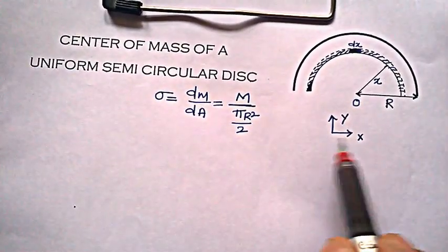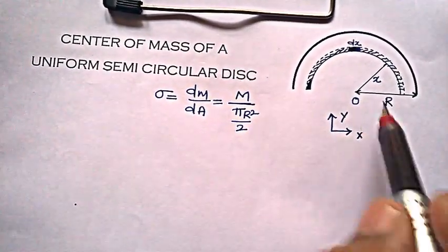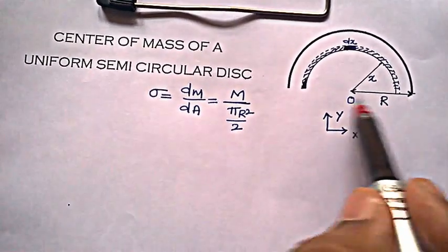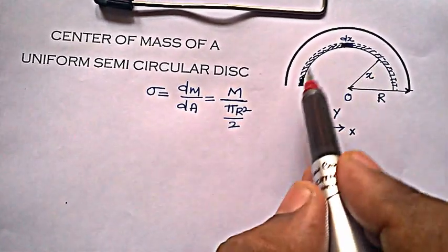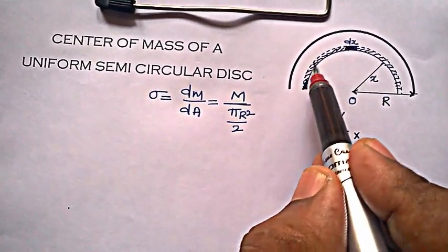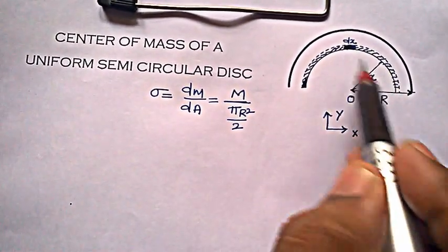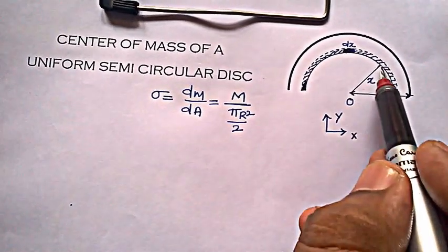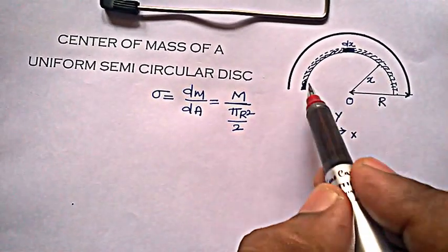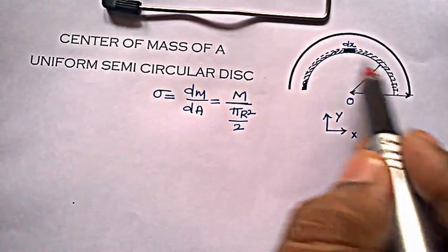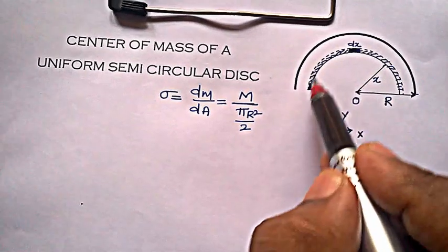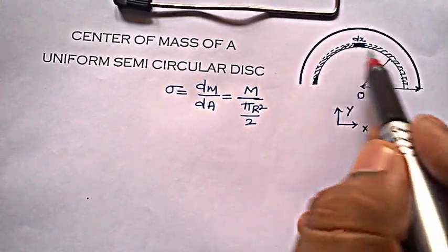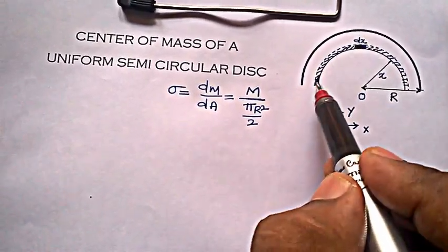I have chosen x and y axes. This is the radius of the semicircular disc, and this is the elemental strip of width dx, where x is the radius of this strip. So this strip is like a semicircular wire or a semicircular ring.